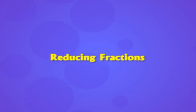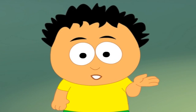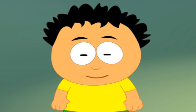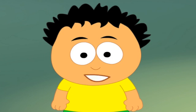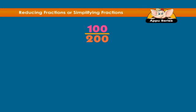Reducing Fractions means writing fractions using the smallest numbers possible. Let's look at an example: 100 over 200. Can you think of a better way to write this using smaller numbers?